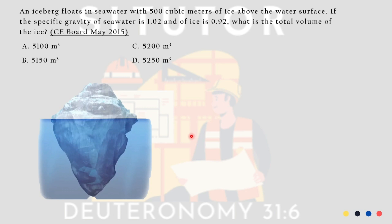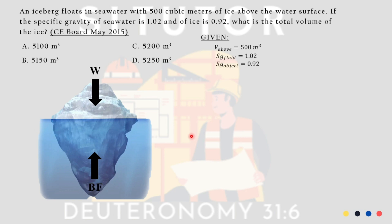In order to solve this problem, we need to know the principle of buoyancy. The principle of buoyancy simply means weight equals buoyant force — the weight of the object equals buoyant force since it is submerged in the water. Given: volume above is 500 cubic meters, specific gravity of the fluid is 1.02, and specific gravity of the object or the ice is 0.92.